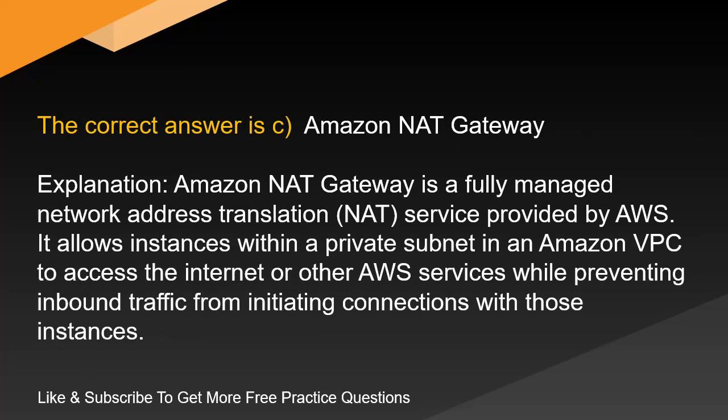Explanation. Amazon NAT Gateway is a fully managed network address translation, NAT, service provided by AWS. It allows instances within a private subnet in an Amazon VPC to access the Internet or other AWS services while preventing inbound traffic from initiating connections with those instances.